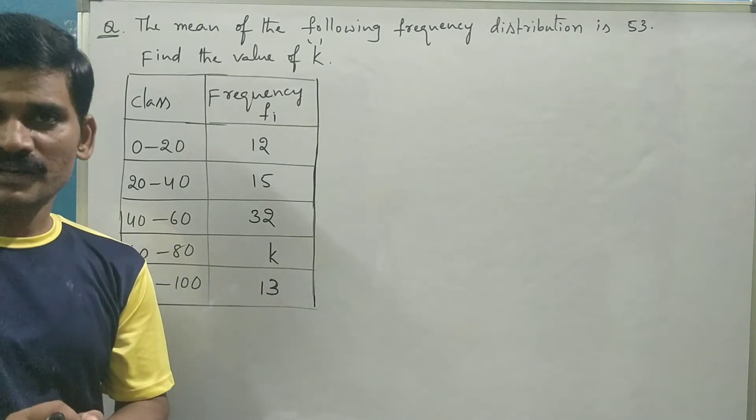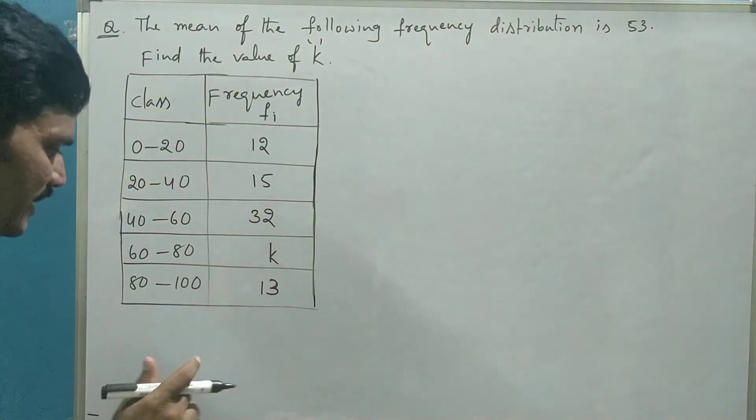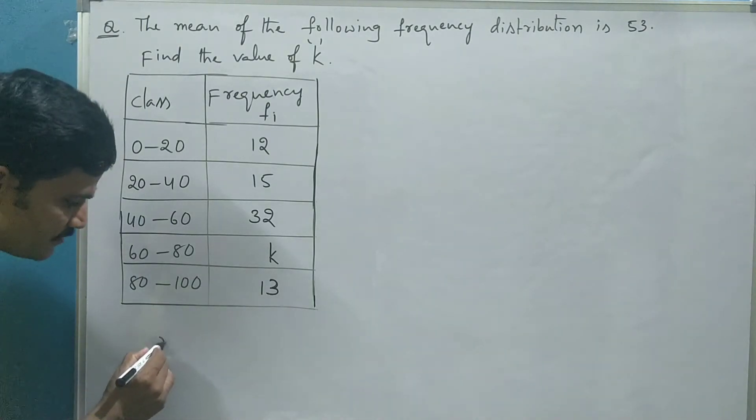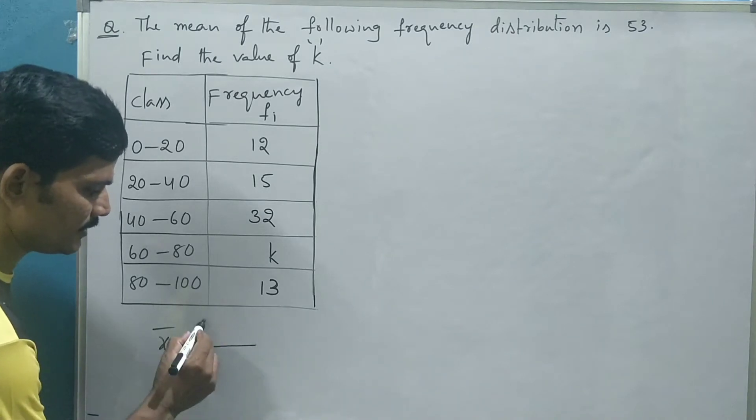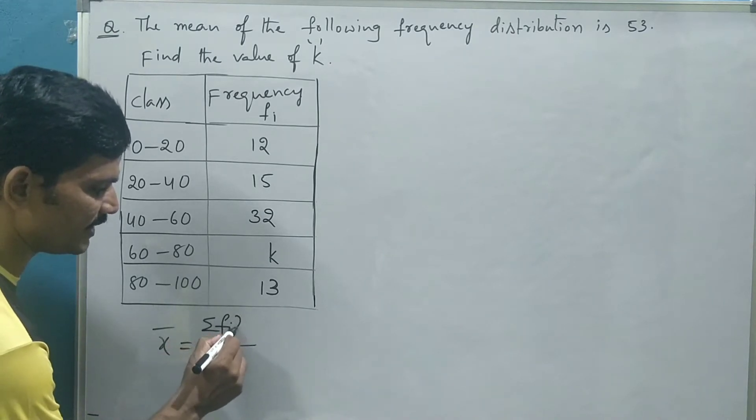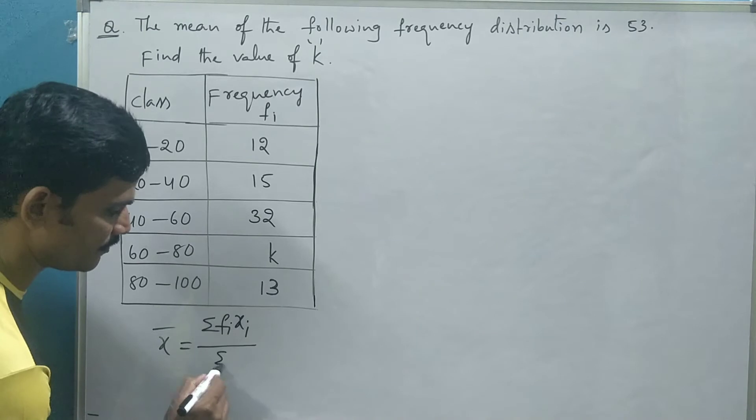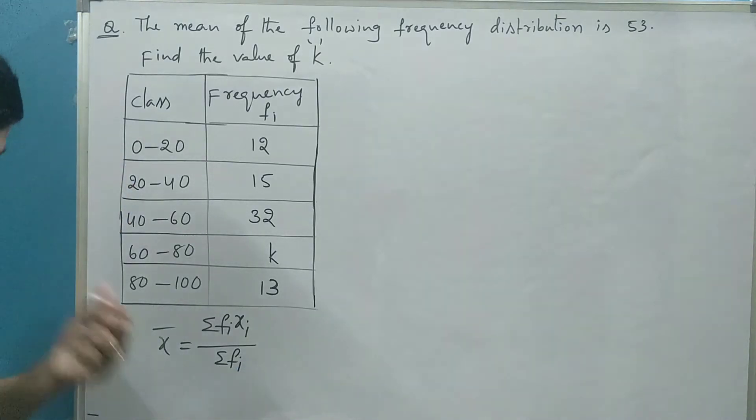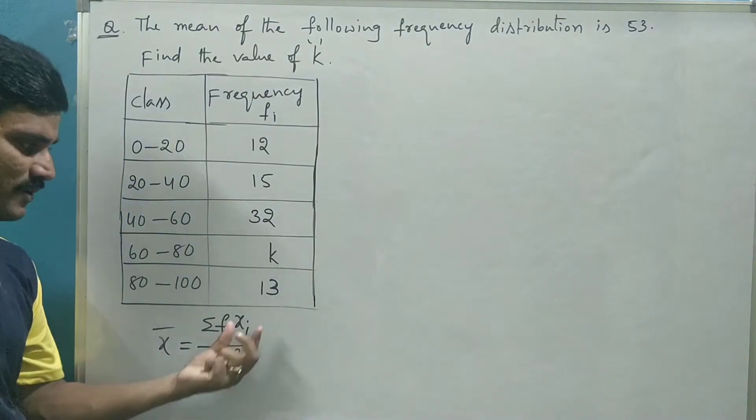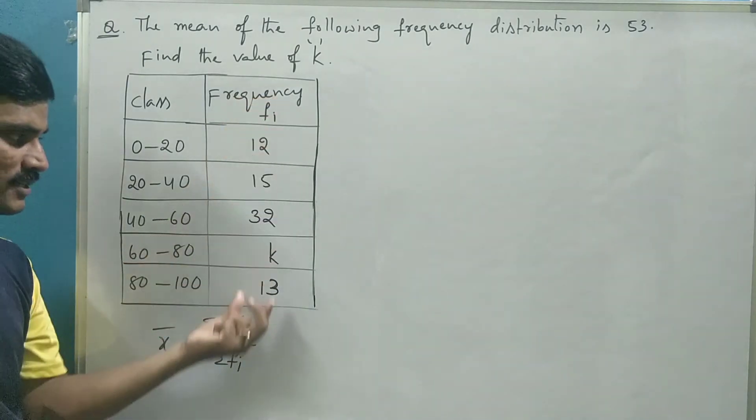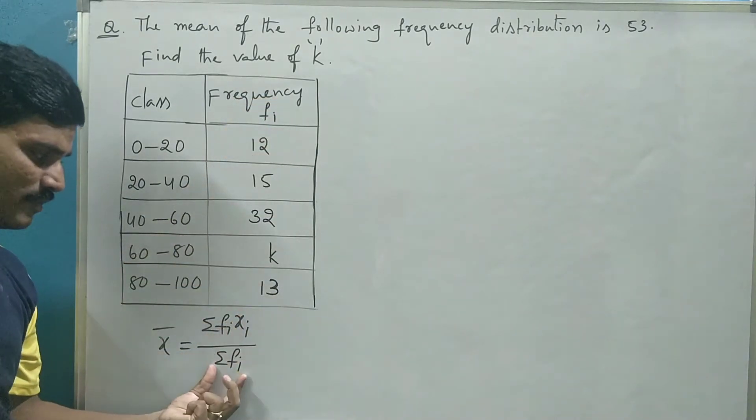What is the formula to find the mean in direct method? Let me write the formula first. Mean x̄ is equal to Σfixi over Σfi. Here, Σfi means sum of the frequencies. If you sum up all these frequencies, you will get Σfi.